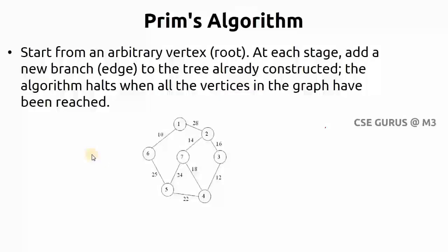Welcome to the class of Design and Analysis of Algorithms. We will go to the next topic, that is Prim's Algorithm. This is one of the methods used to find the minimum cost spanning tree, that is the shortest path that can be reached by visiting all the vertices in a graph. Before entering into Prim's algorithm, we will quickly review what is a minimum cost spanning tree.